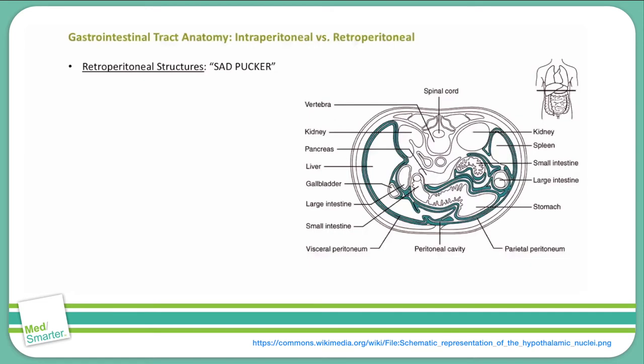Now, to get oriented to our diagram: if you're familiar with cross-sectional imaging, this may seem a bit unusual. Note that the dorsal side of the patient is on top and the ventral side is facing down. The peritoneum is visualized here as all of this blue tissue forming the abdominal cavity.